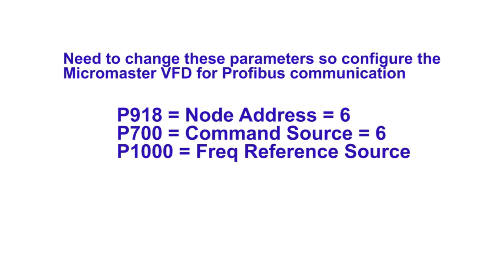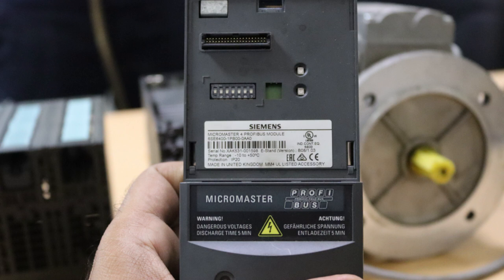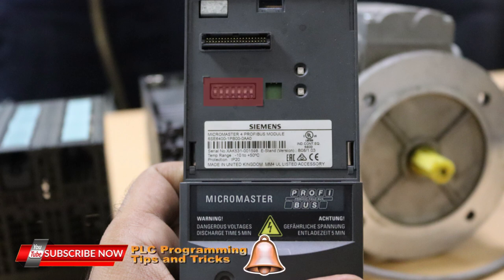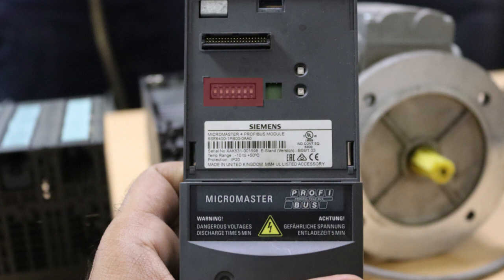The third parameter is P1000 and it is the reference frequency. Now as you can see, this is our Profibus module and on the top there are DIP switches used to configure its node address. Remember: if all DIP switches are set off, the VFD will not read these DIP switches and will directly take the address from parameter P918, which we have set to 5. If we set the node address from the DIP switches, then parameter P918 will be bypassed and the VFD will read the node address directly from the DIP switches. These are the initial settings before starting programming in Simatic Manager.